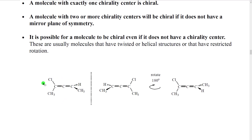It turns out that if we build a model of this molecule, you would see that the two groups on this trigonal planar carbon are in the plane of the paper, but the groups on this other trigonal planar carbon are perpendicular — one is sticking out on a wedge, one is going back on a dash. They're rotated 90 degrees from each other. This rotation can have a direction, and that gives it chirality.